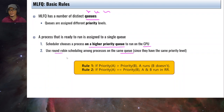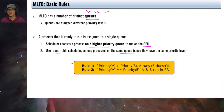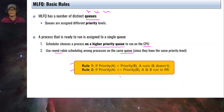For the basic rules of MLFQ: Rule 1 — if the priority of process A is greater than the priority of process B, A will run and B will not run. Rule 2 — if the priority of A is the same as the priority of B, A and B will run in round-robin.